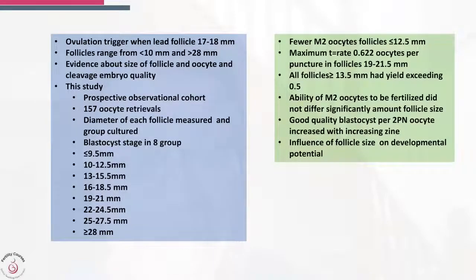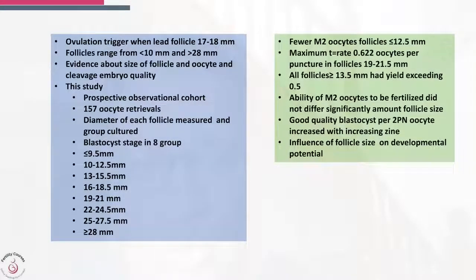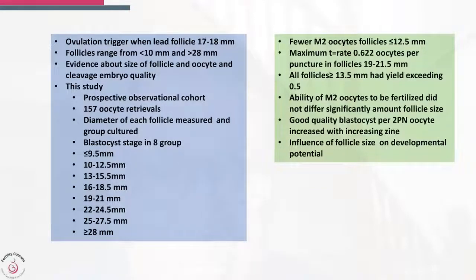The study found that fewer metaphase 2 oocytes were observed in follicles less than 12.5 mm, and the best rate of getting mature oocytes was between 19 and 21.5 mm. Follicles that crossed 13.5 mm gave a reasonable rate of oocyte retrieval. The ability of metaphase 2 oocytes to be fertilized did not differ significantly based on follicle size once a mature oocyte was obtained. Good blastocysts per 2-PN oocyte increased with increasing follicle diameter.